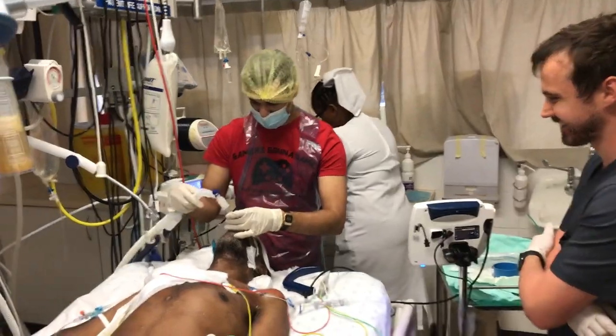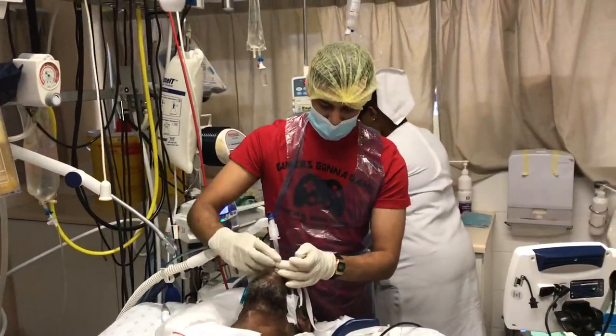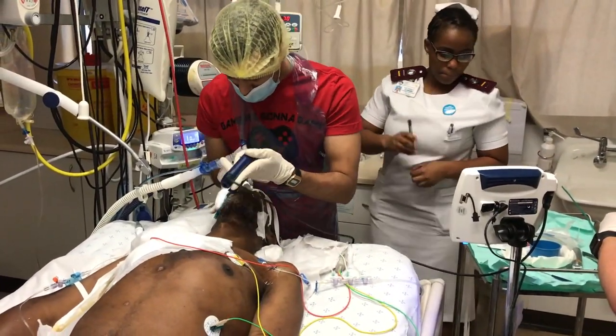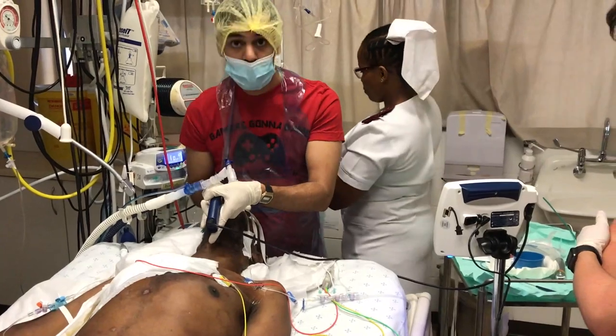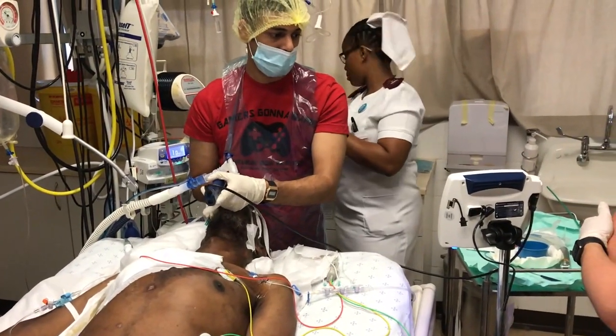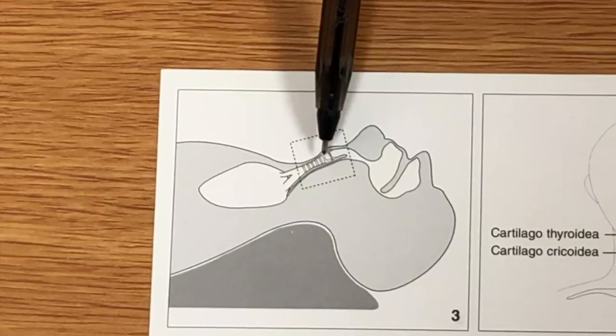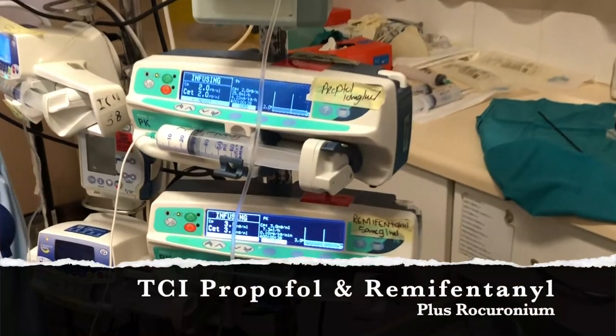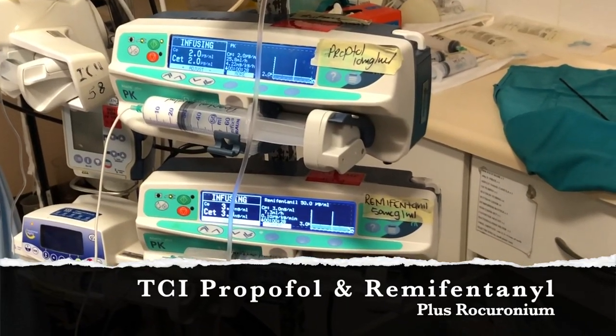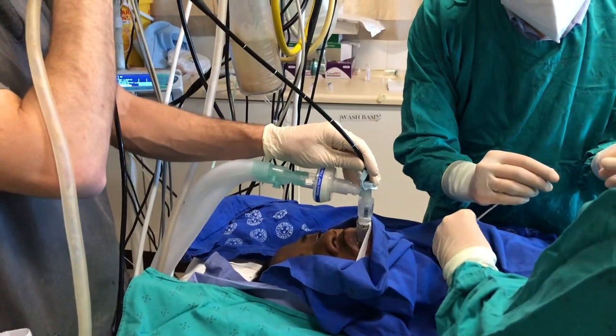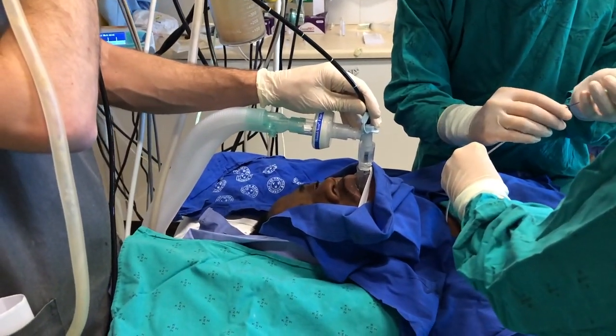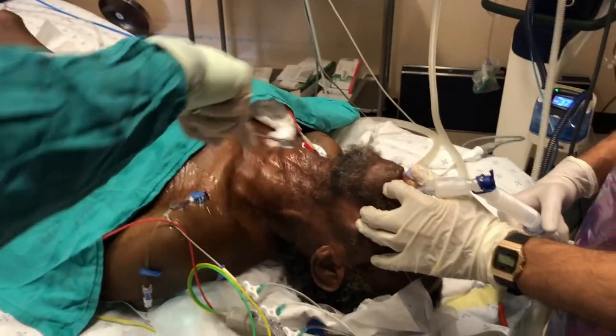Options for endotracheal tube management: withdraw the existing tube to just above the cords, inflate the balloon and hold it there. Second option is to intubate the patient with a smaller tube like a size six that is sited just through the cords and typically will not occupy the trachea. The final option is a supraglottic airway, but because of the extreme neck extension required, supraglottic airway does not always seat well.